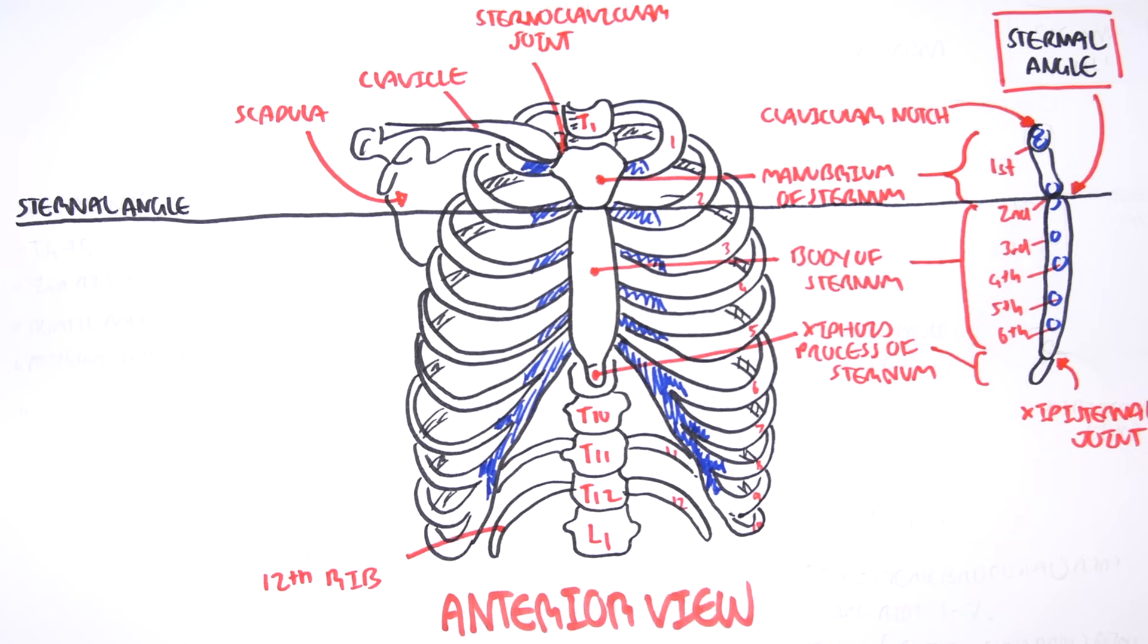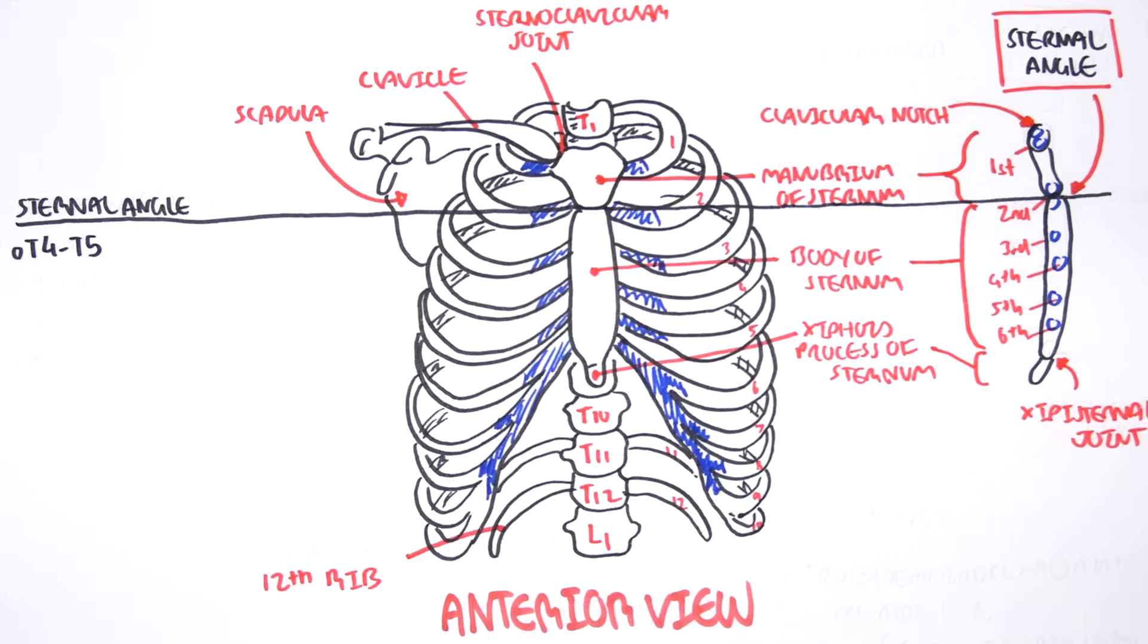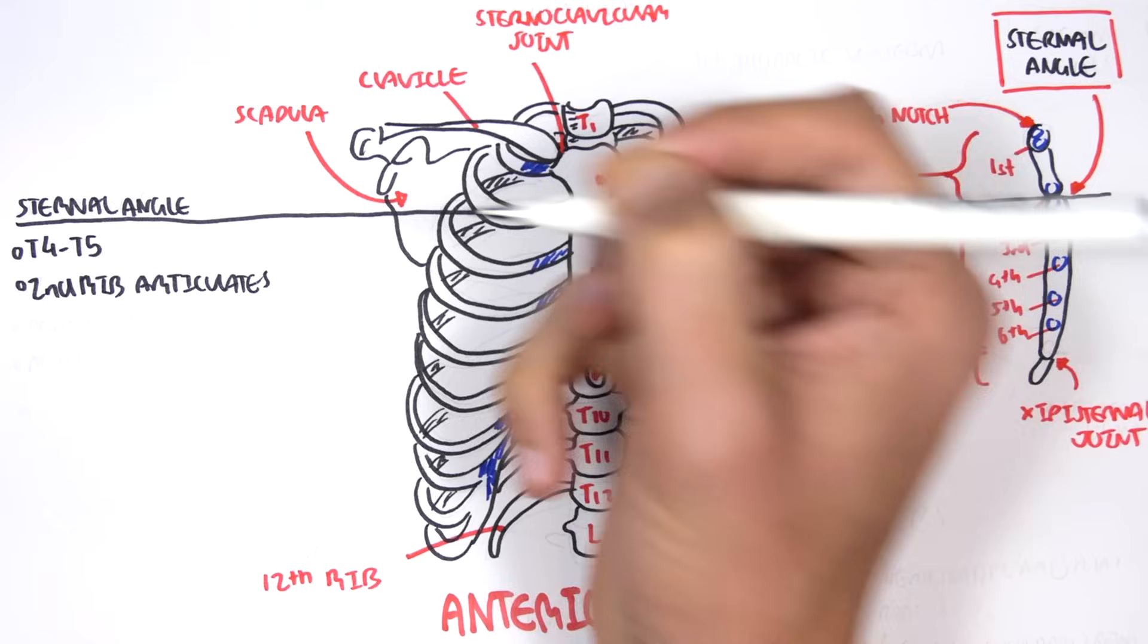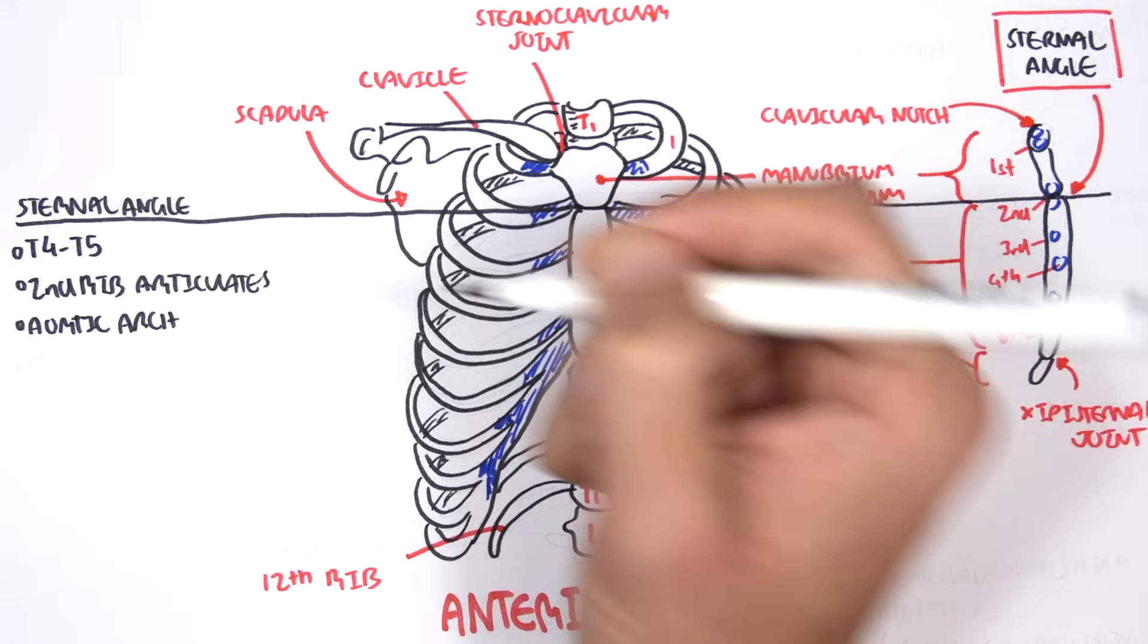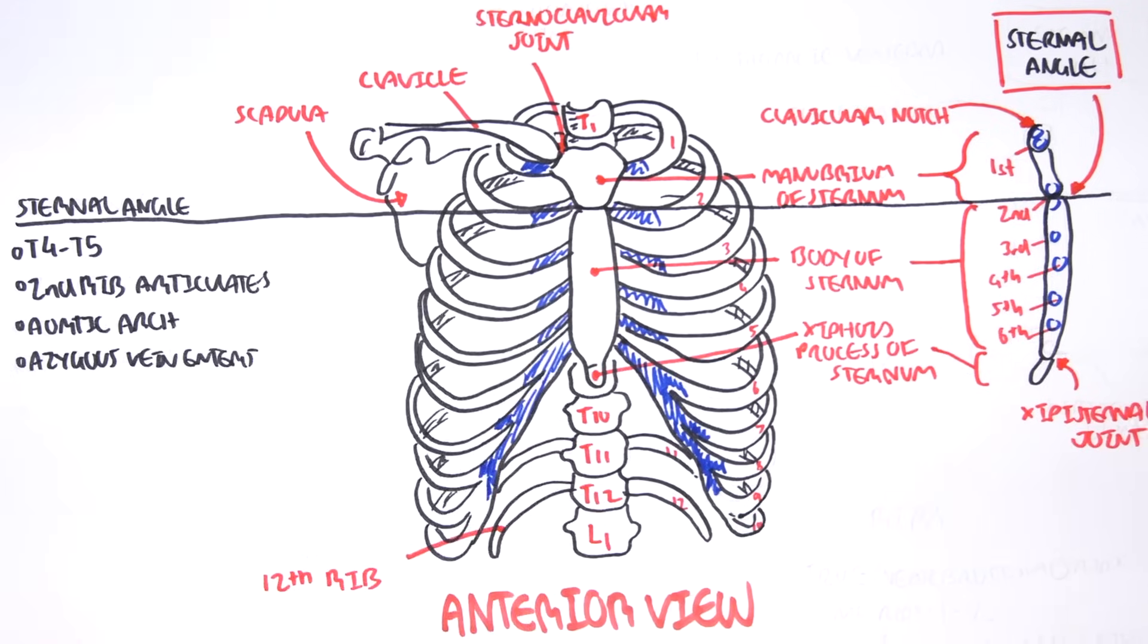Such as the joint between thoracic vertebra 4 and 5, so T4-5. The second rib articulation occurs here. We can find the aortic arch, azygous vein as well, entering into the heart.